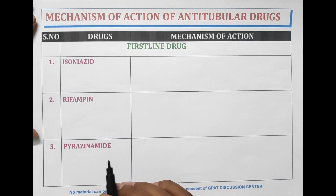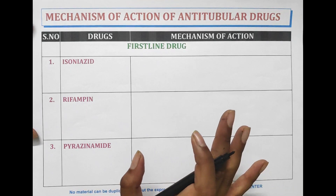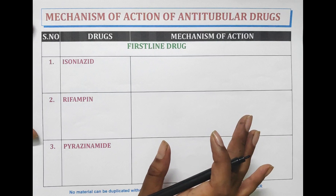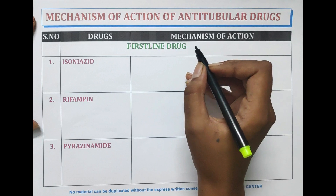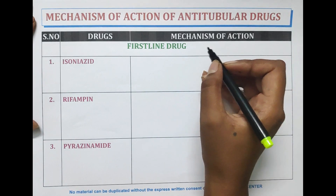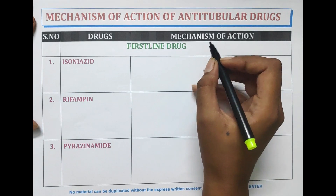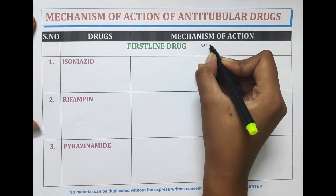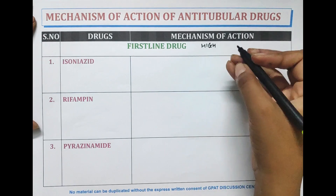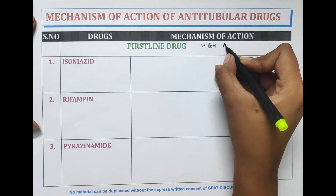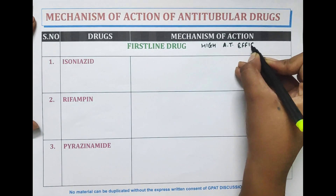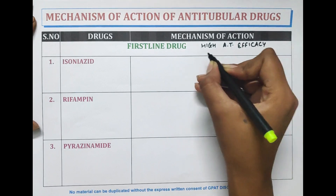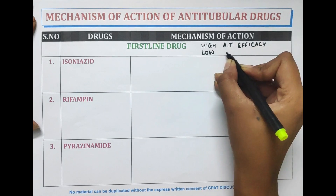Two lines — first line and second line of drugs — are used in the treatment of tuberculosis. First line drugs are drugs having high anti-tubercular efficacy as well as low toxicity.